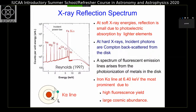Imagine a power-law continuum illuminating the accretion disk. Below about 10 keV, photoelectric absorption dominates over Compton scattering; above 10 keV, the Compton scattering cross-section dominates. At low energies, elements like iron, silicon, sulfur, and carbon get photoelectrically absorbed. For example, the iron atom absorbs X-ray photons above about 7.1 keV, hence the absorption edge there. Once the iron atom absorbs the photon, the K-shell electron is ejected, creating a vacancy which is then filled by an L-shell electron. The energy difference between the K and L shells is emitted as the iron Kα photon at 6.4 keV.